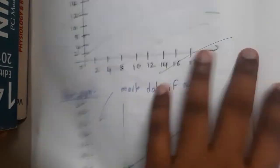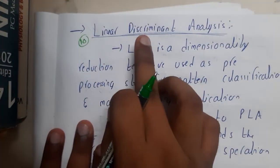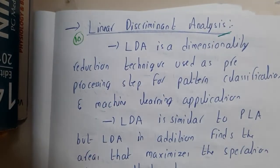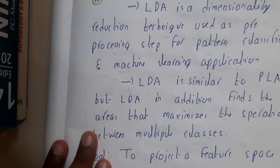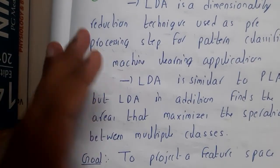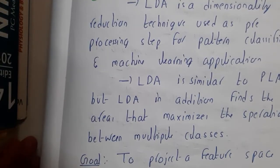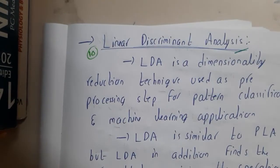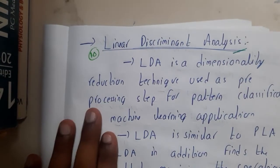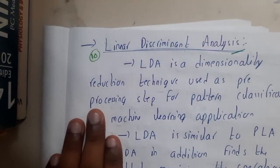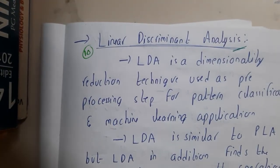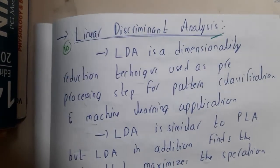In the next lecture we will be discussing Linear Discriminant Analysis, which is one more dimension reduction method. When compared to the analysis we did so far, PCA is a bit more complex. Let us meet in the next lecture and discuss about Linear Discriminant Analysis — thank you for watching.